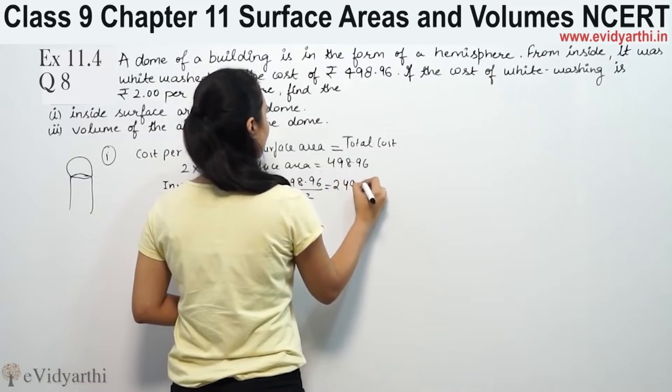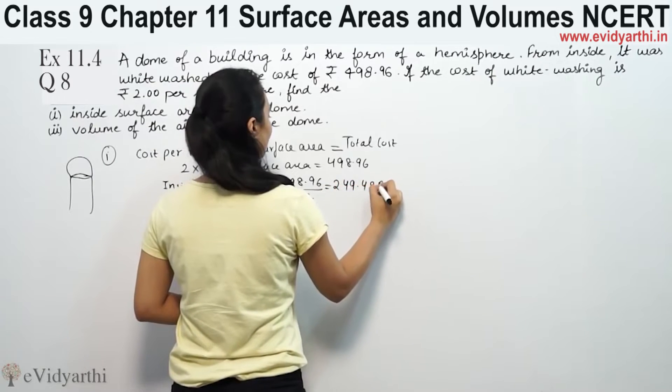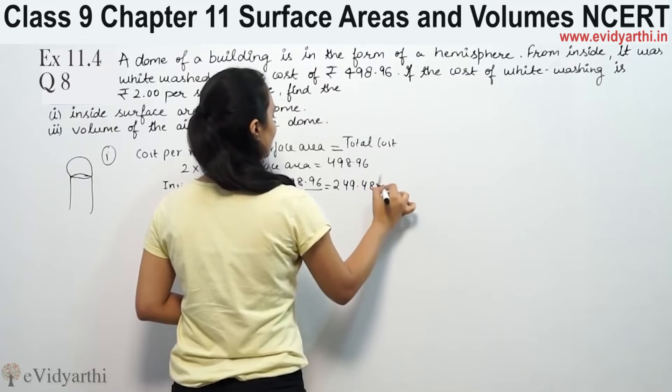Inside surface area equals 498.96 divided by 2, which will be 249.48 meter square. This is the inside surface area.